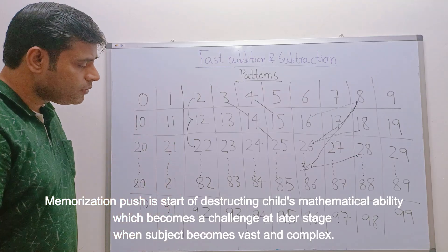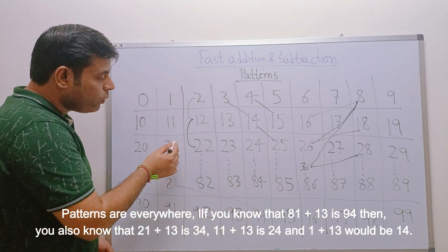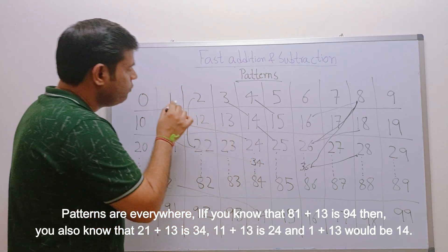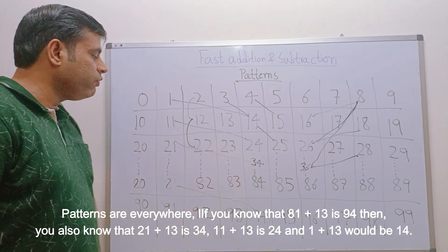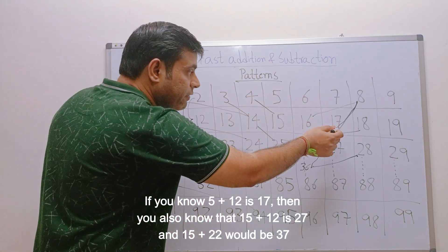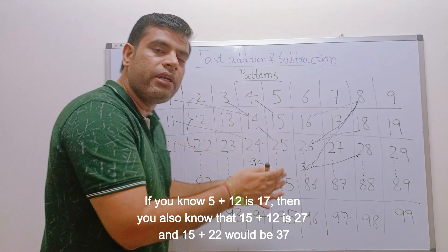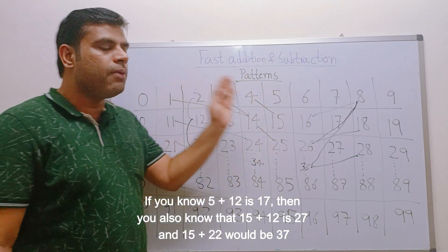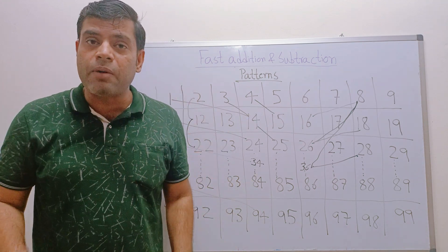Patterns are everywhere: 81 + 13 = 94, same as 21 + 30 would give 34 in a similar structure. 11 + 13 = 24; 1 + 30 = 14 — if you know 1 + 13 = 14, you also know 11 + 13 = 24, 21 + 13 = 34, 31 + 13 = 44. If you know 5 + 12 = 17, you also know 15 + 12 = 27, and 15 + 22 = 37. Once you're in three digits, the pattern expands. It's very easy to do calculations up to six or seven digits mentally without paper and pen.